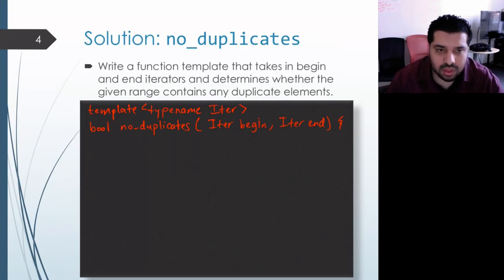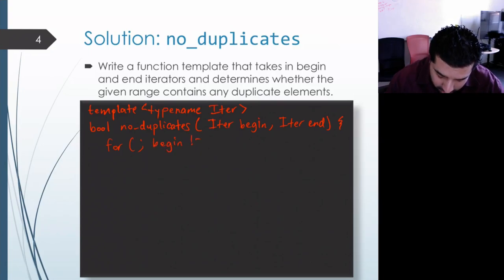So let's write the outer loop first. We'll use the begin iterator to do our iteration, so we won't actually create a new iterator here in our for loop. Of course when begin is equal to end that's when we run out of elements, so we'll continue as long as those two are not equal, and we'll use prefix plus plus to increment the iterator and move it to point to the next element in the sequence.